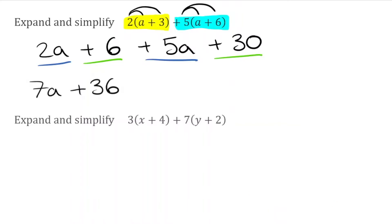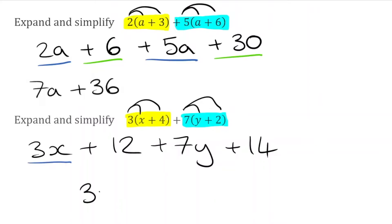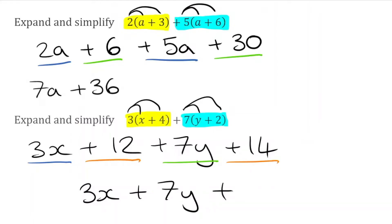For this next question, the first bracket is 3(X+4) and the second bracket is positive 7(Y+2). Expanding the first: 3 times X is 3X, and 3 times positive 4 is plus 12. In the second bracket: 7 times Y is plus 7Y, and 7 times 2 is plus 14. Collecting like terms: 3X is the only X term, 7Y is the only Y term, and 12 plus 14 gives plus 26. The final expression is 3X plus 7Y plus 26.